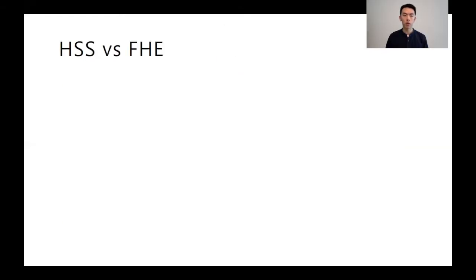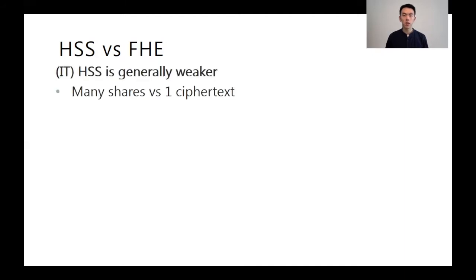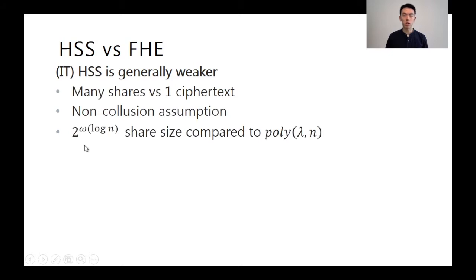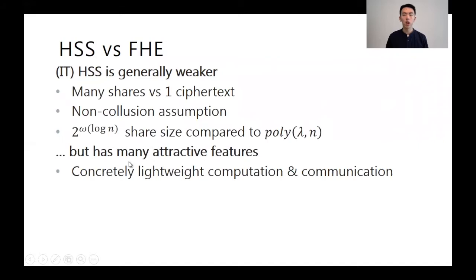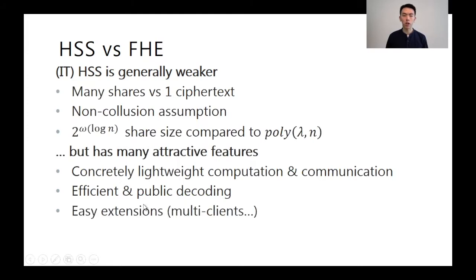Let's compare HSS with fully homomorphic encryption to see why it is an interesting primitive, in addition to being unconditionally secure. HSS has its main drawback in that it requires many shares and the servers to be non-colluding. And even worse, for slightly more complicated functions, the share size is already super-polynomial, compared to the computational world where FHE has ciphertext size polynomial in the security parameter and the input size. But HSS has many attractive features which FHE does not have. Concretely, HSS has lightweight computation and communication, since no complex crypto operations are involved and there is no overhead in the security parameter. It also allows efficient and public decoding, where the decoding is often just a single addition over the output share, which allows easy extension to settings with multiple clients.